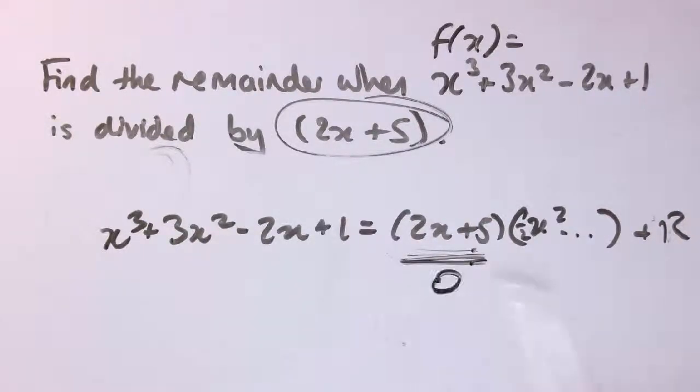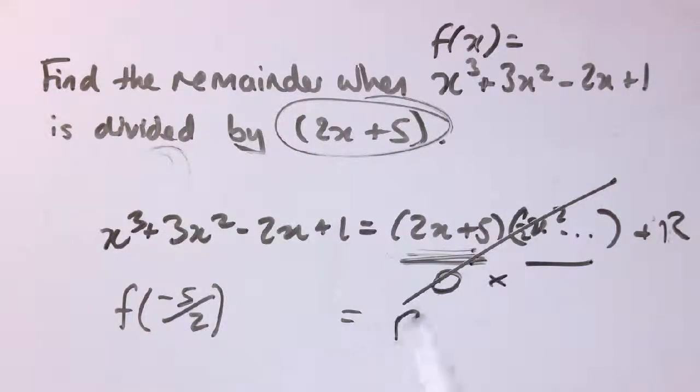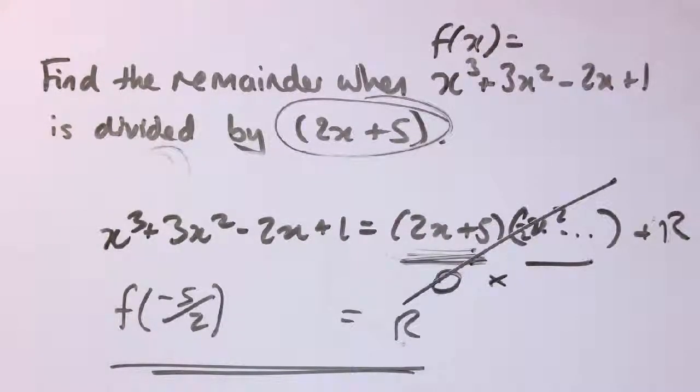If I put minus 5 over 2 in here, this is zero, so it's zero times something - it doesn't matter what it is, that's zero. So when I put in minus 5 over 2, I just get zero plus R, I just get the remainder. That's kind of a hand-wavy proof of why the remainder theorem works. So that's it, that's the remainder theorem.